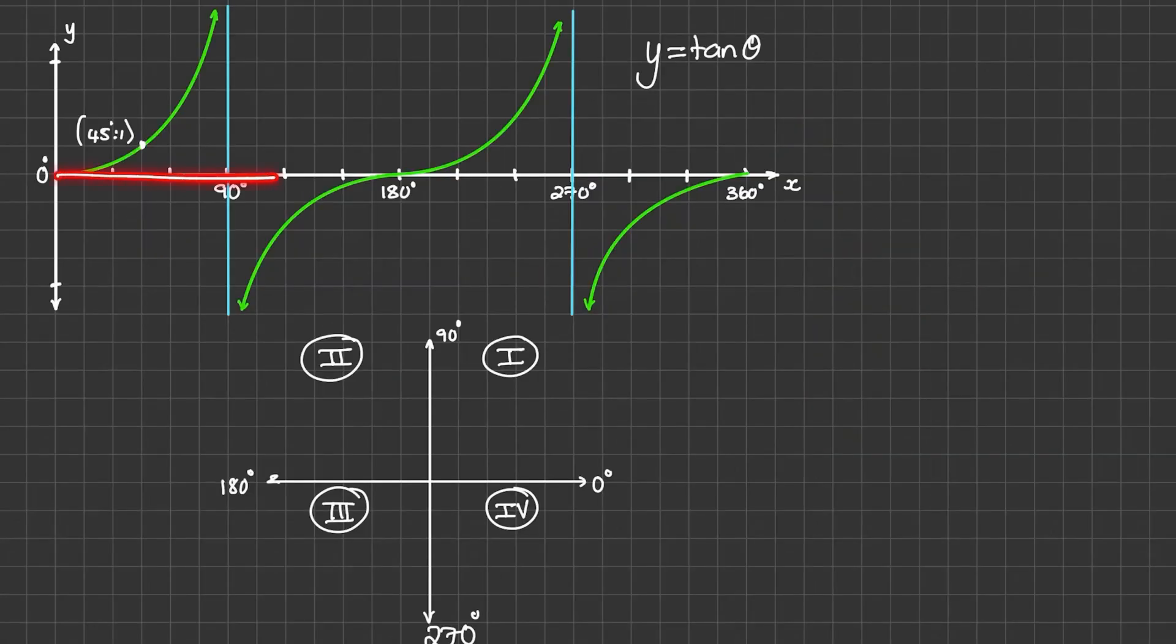Now let us use the function of the tangent of theta to discuss the property of tan theta in terms of the Cartesian plane. In the first quadrant, between 0 and 90 degrees, we can see that the tangent of theta produces positive results.